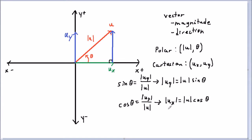For u sub x and u sub y, we only need to specify the magnitude since we know they point in the x and y directions. If they point in the negative direction, technically the magnitude should be positive, but with this definition we can consider them negative. A negative magnitude simply means the vector points in the opposite direction. So we can now convert from polar form into Cartesian component form.